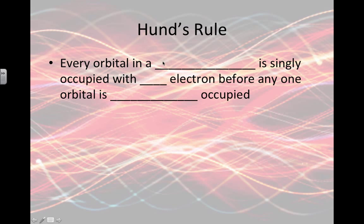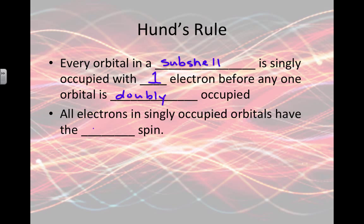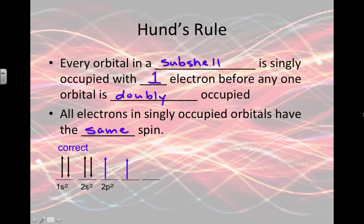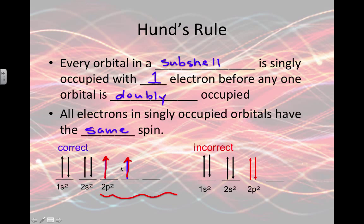Hund's rule tells us that every orbital in a subshell is singly occupied with one electron before any orbital is doubly occupied. All electrons in singly occupied orbitals will have the same spin. So as we're putting one electron in each orbital, they're all going to spin in the same direction first. Here's our 2p where I put one arrow on each individual line first before I put them in the same line. Here's how it would look when it's incorrect. It would be wrong to put both of them there without having an electron in the other orbitals first.